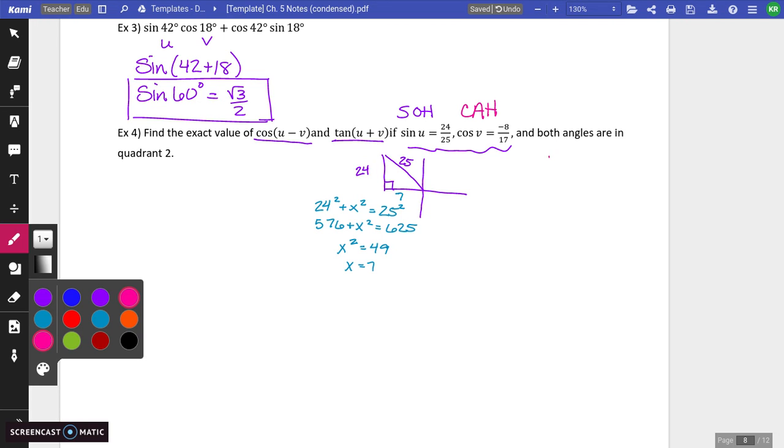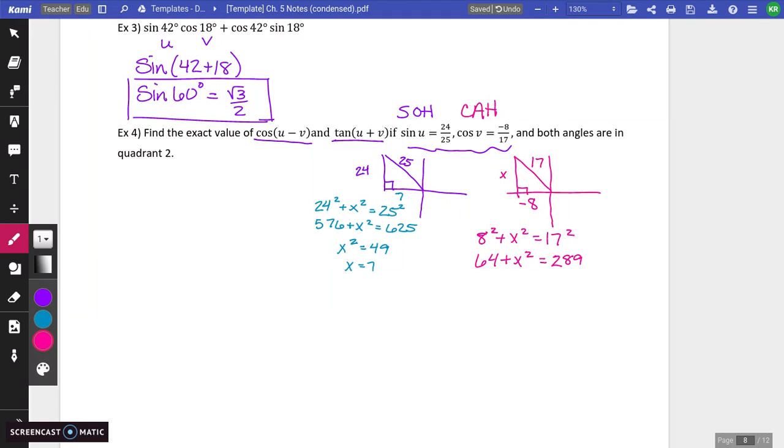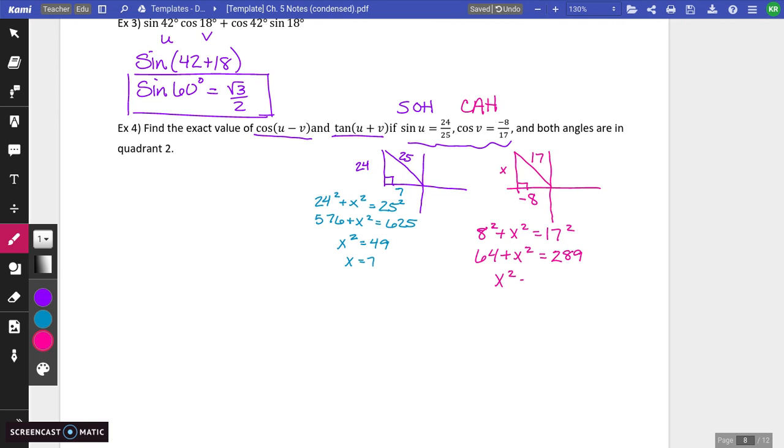Okay, so this is a different angle. Okay, but it's also in the second quadrant. Cosine is negative 8 over 17. So that's adjacent and hypotenuse. And then again, you're going to find that missing side. So you're going to have 8 squared plus x squared equals 17 squared.